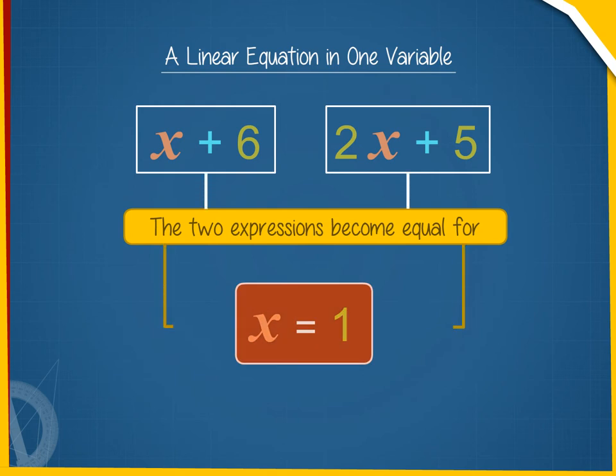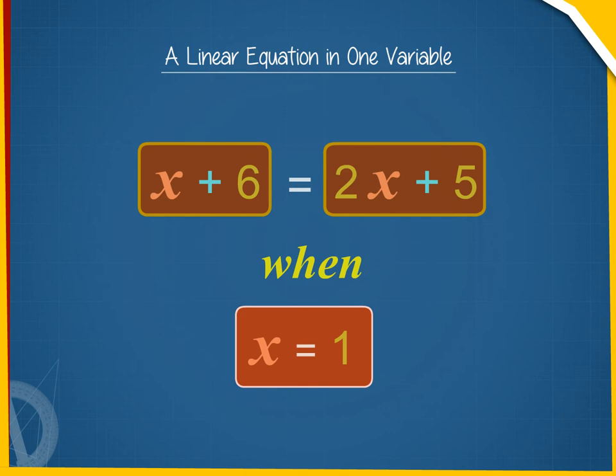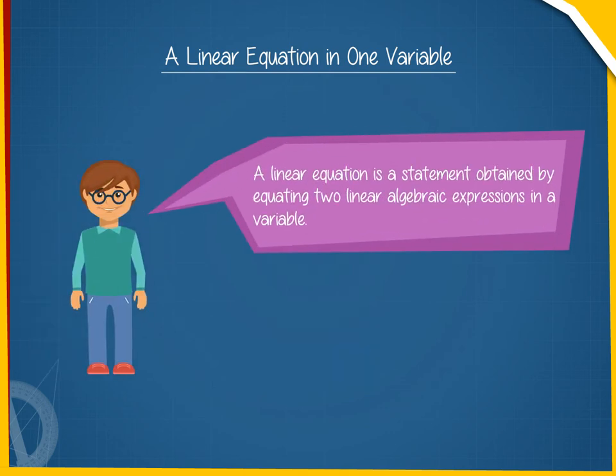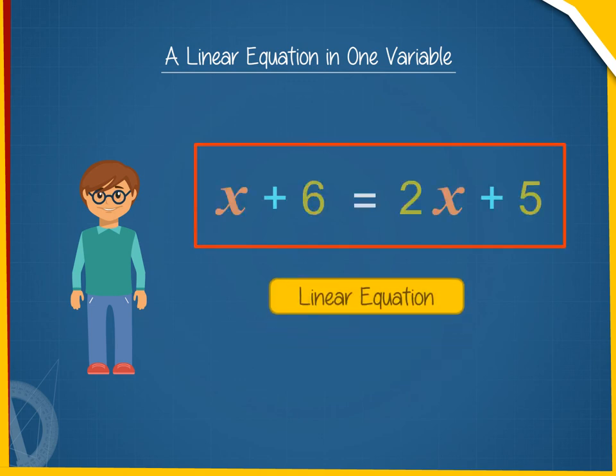So we can equal the two expressions x plus 6 and 2x plus 5 for x equals 1. This idea helps us define a linear equation. A linear equation is a statement obtained by equating two linear algebraic expressions in a variable. Thus, x plus 6 equals 2x plus 5 represents a linear equation.